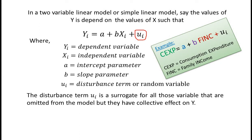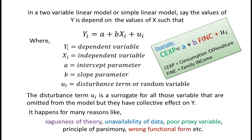The disturbance term u_i is a surrogate for all those variables that are omitted from the model but have a collective effect on y. This happens for many reasons like vagueness of theory, unavailability of data, poor proxy variables, the principle of parsimony, wrong functional form, etc. Because of these reasons, we add the random variable u_i to an econometric model even though we have explanatory independent variables.